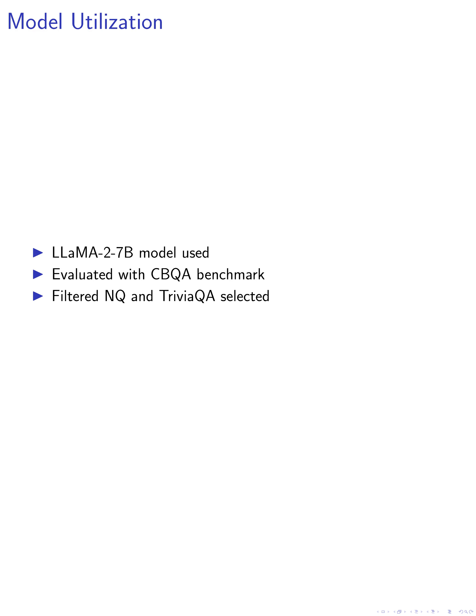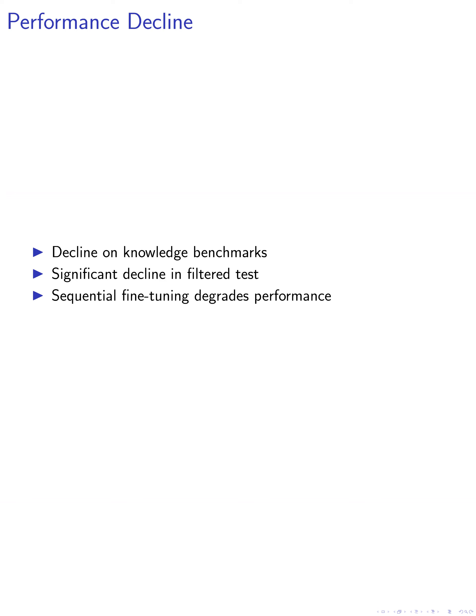We evaluate the model's world knowledge using the CBQA benchmark. For a more comprehensive analysis, we select parts of the CBQA dataset without train-test overlap, namely filtered NQ and filtered Trivia QA. We observe a decline in the model's performance on knowledge benchmarks such as Trivia QA, NQ, and Hotpot QA as we expand the fine-tuning data. This decline is even more significant in the filtered test set.